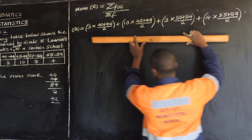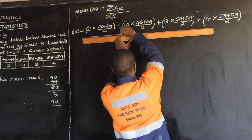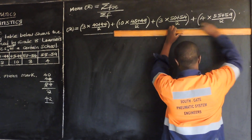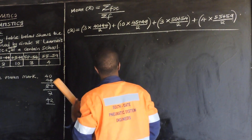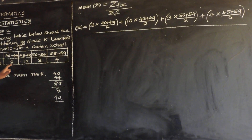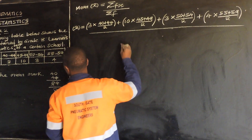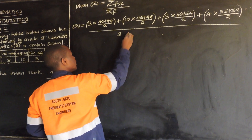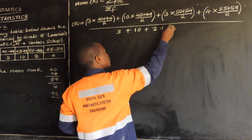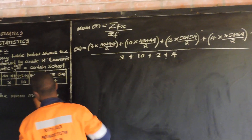Then you say over what? Over the total frequency. So the total frequency, we just need to add the frequencies up: 3 plus 10 plus 3 plus 4. That is the summation of the frequency — just add the frequencies up.